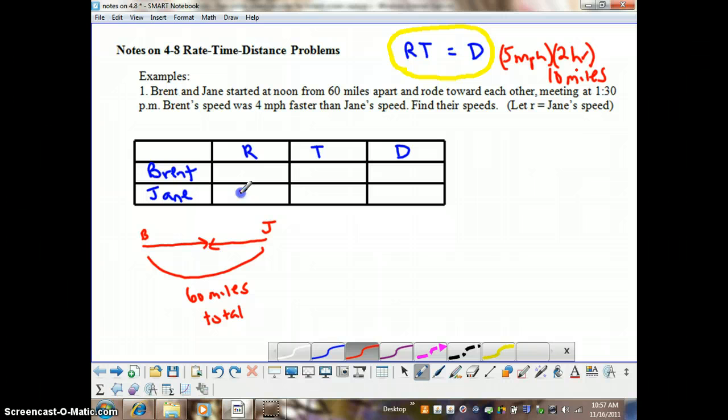So, I have a chart here. I'm going to have Jane's speed be r, and Brent is 4 miles per hour faster. So, that would be r plus 4.